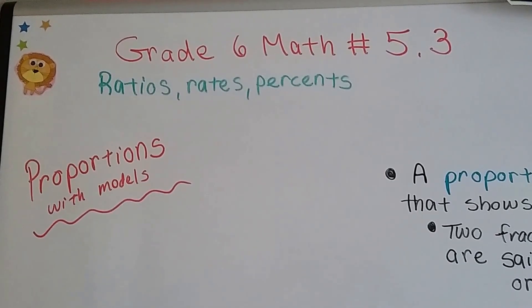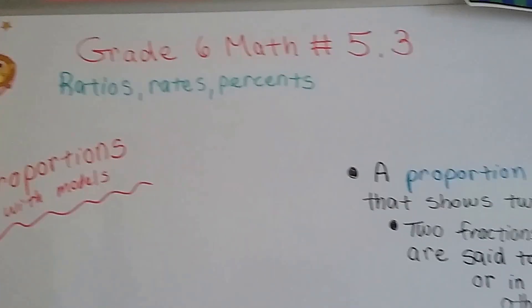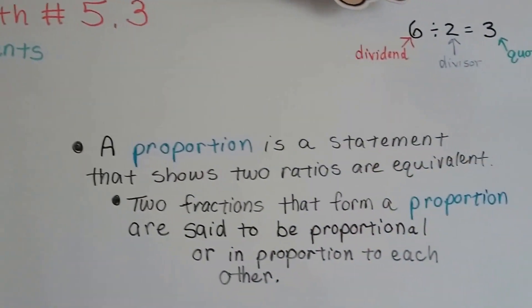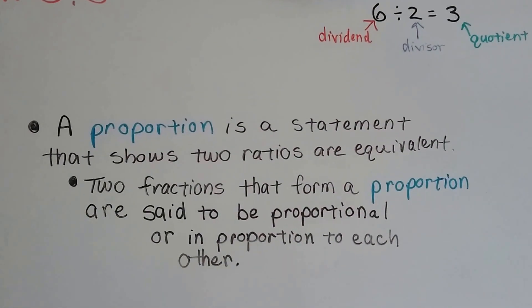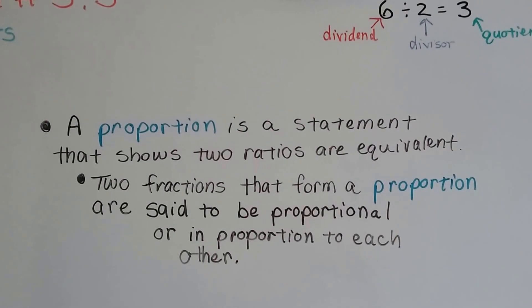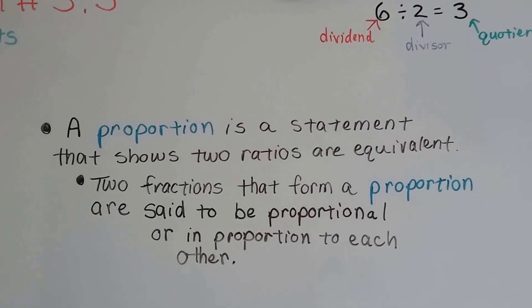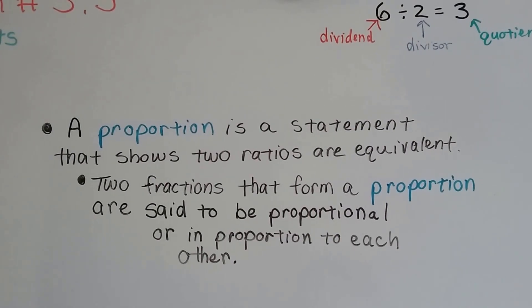Grade 6 math number 5.3, proportions with models. A proportion is a statement that shows two ratios are equivalent to each other. They're equal to each other. Two fractions that form a proportion are said to be proportional or in proportion to each other.